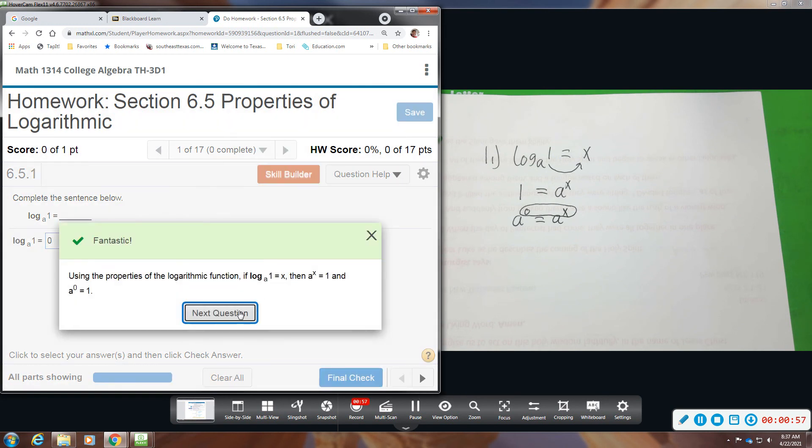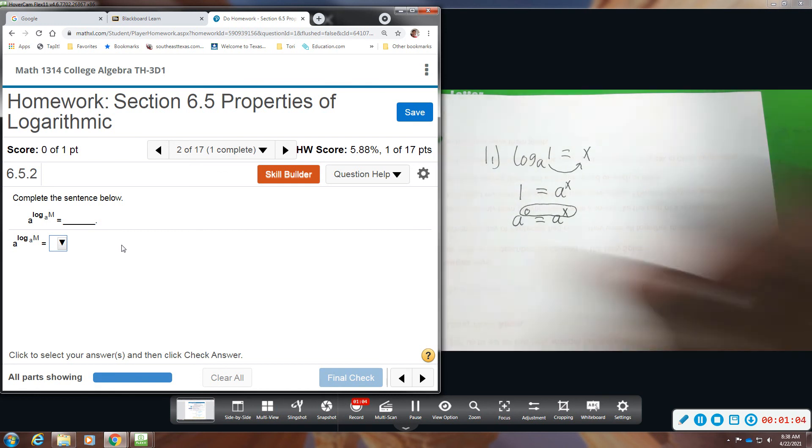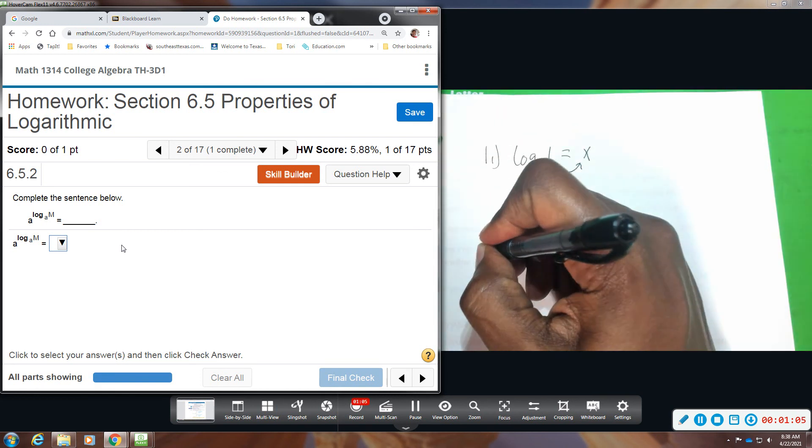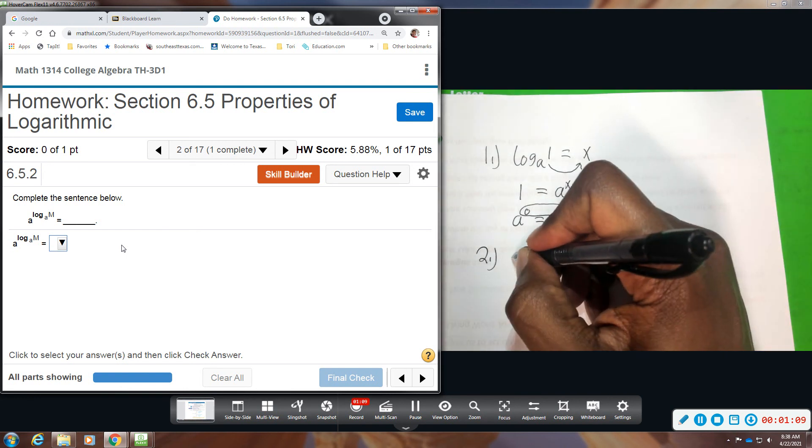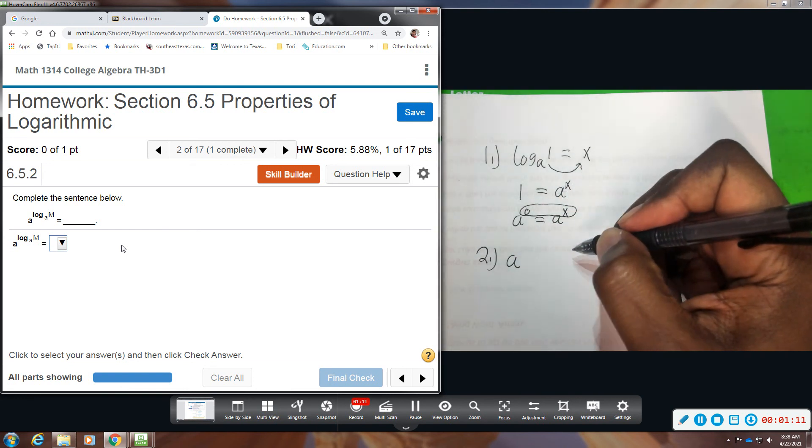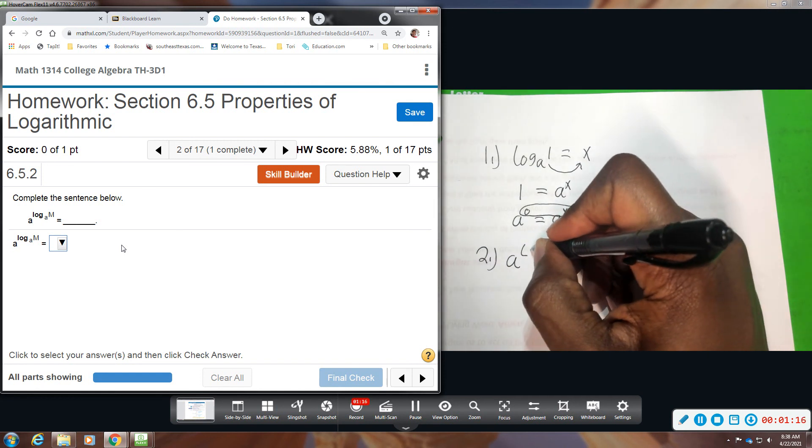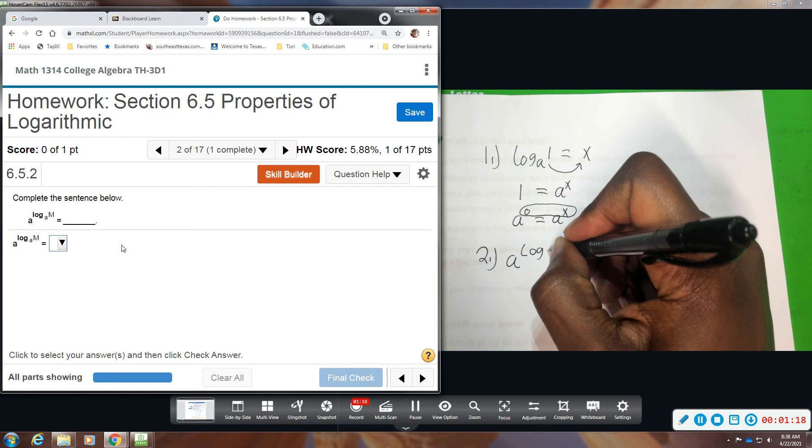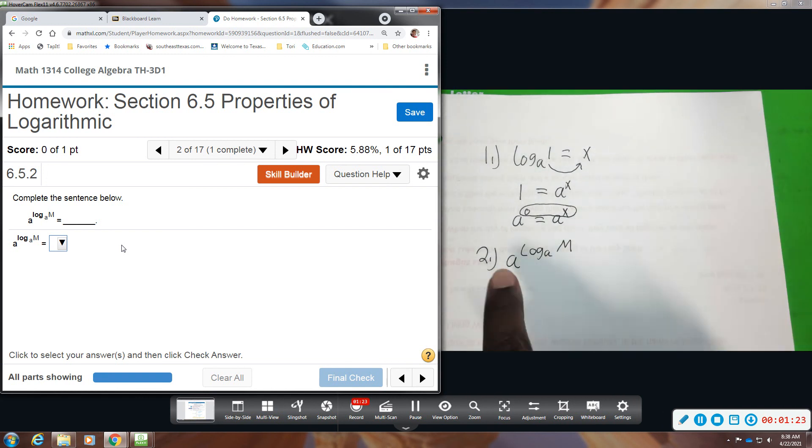Now this one, we will also complete this statement. This is another one of those properties, so I'll work it out so you can see. We have a raised to the power log base a of m. If your base is a and you're taking the log base a, these cancel each other out like that cancellation property.